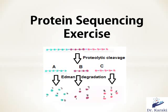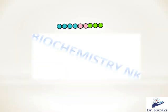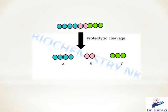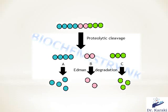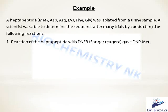Hello, this is Dr. Karaki. In this video we will solve an exercise on protein sequencing. To sequence amino acids in a protein, the first step is to break down that protein into small fragments using proteolytic enzymes. We then isolate the fragments and use Edman degradation on each to determine the sequence. To find the correct order of fragments, we use two or more proteolytic enzymes to produce different sets of fragments and use overlapping regions to determine the sequence.